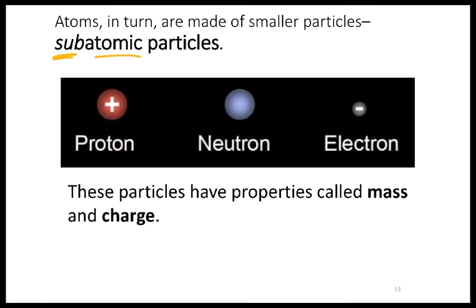There are only three. So gold is made up of the same three particles, protons, neutrons, and electrons, as oxygen, as carbon, as sodium. And these three particles have properties called mass and charge. And that's what we're going to talk about for the rest of this lecture.